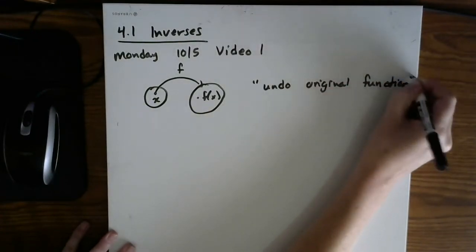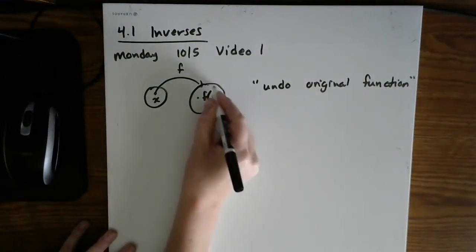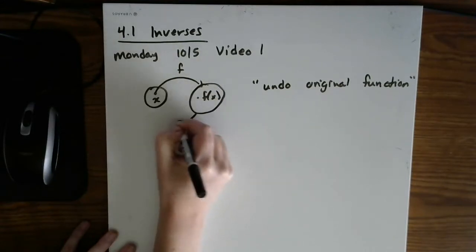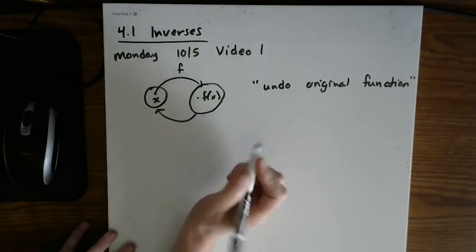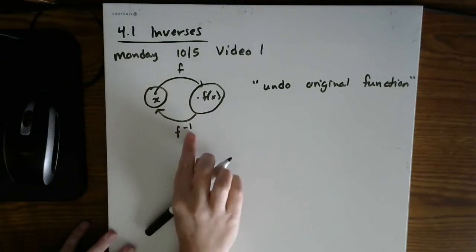So instead of doing this in a forward motion, now imagine that you start with a value in here and you end up with the value on the left. So first of all, let's use proper notation here.